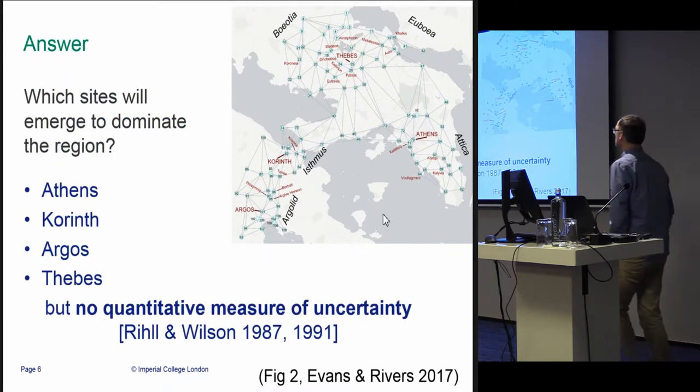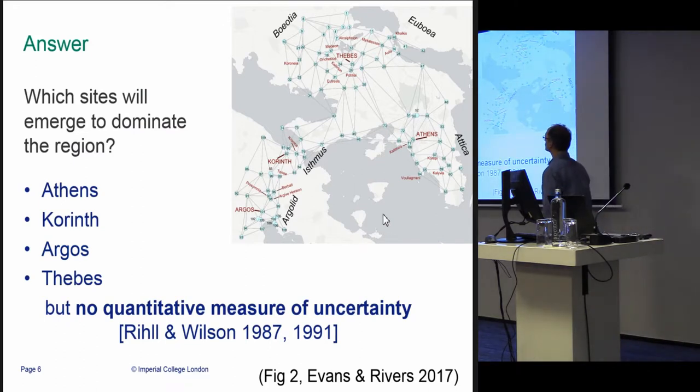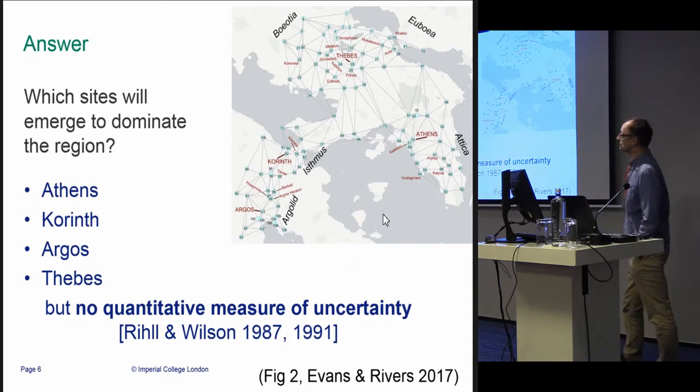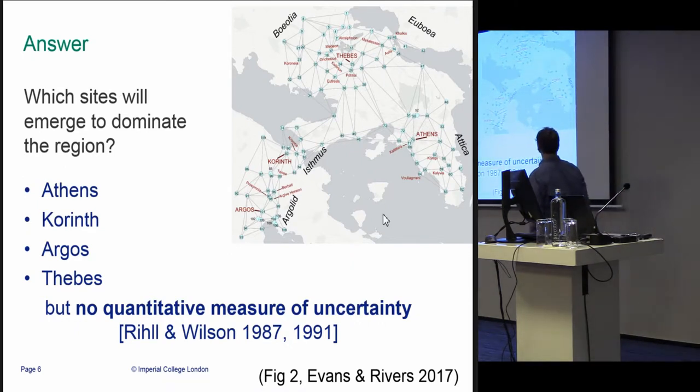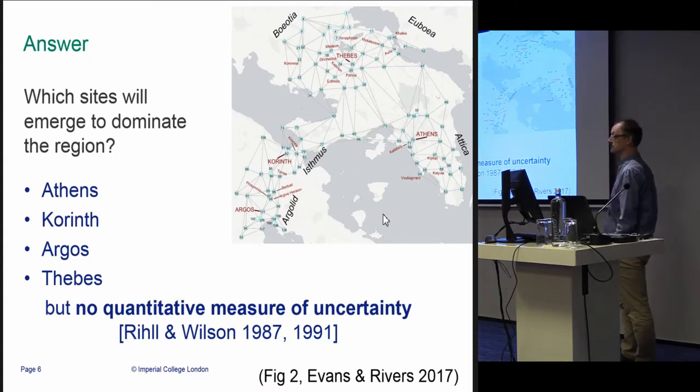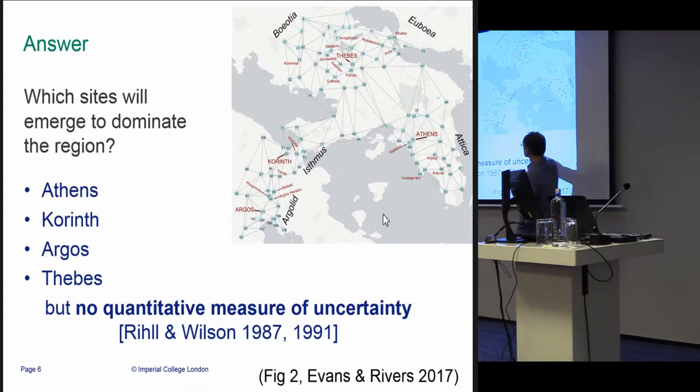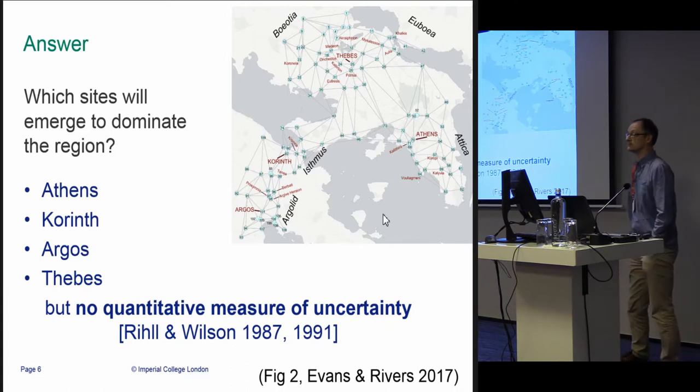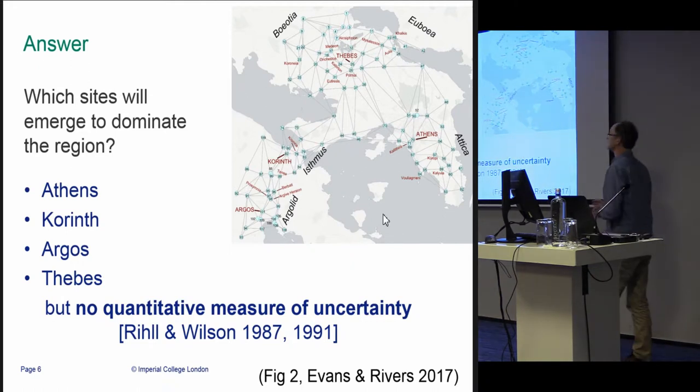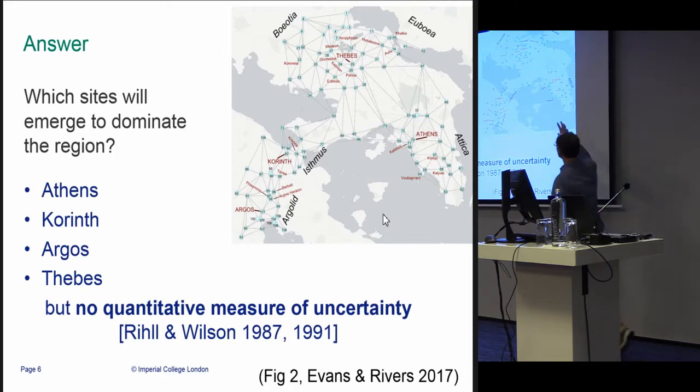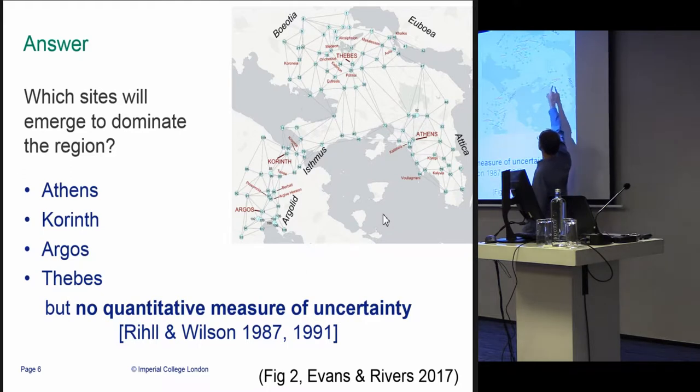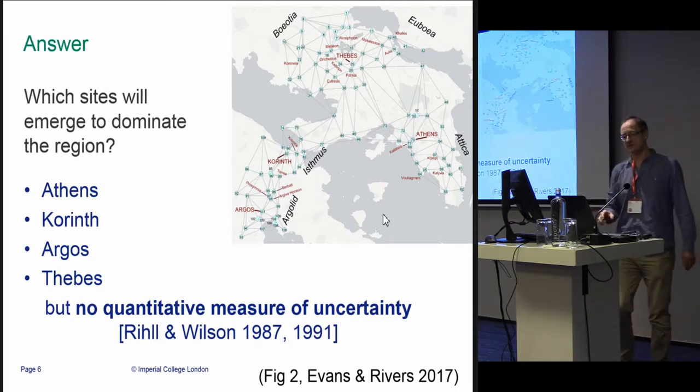Now, the answer is very obvious—which of the sites will emerge to dominate the region? Well, we know the answer: it's four of the major ones—Athens, Corinth, Argos, and Thebes—and that's what I will focus on. But what particularly attracted our attention was that in the original paper there was no quantitative measure of uncertainty. We were trying to take this study and wondered how certain could you be that Thebes does emerge as the dominant site up in Boeotia? How certain can you be that Athens, just because of geography, would always have emerged? There wasn't any measure of that, so we set out to try and do that.